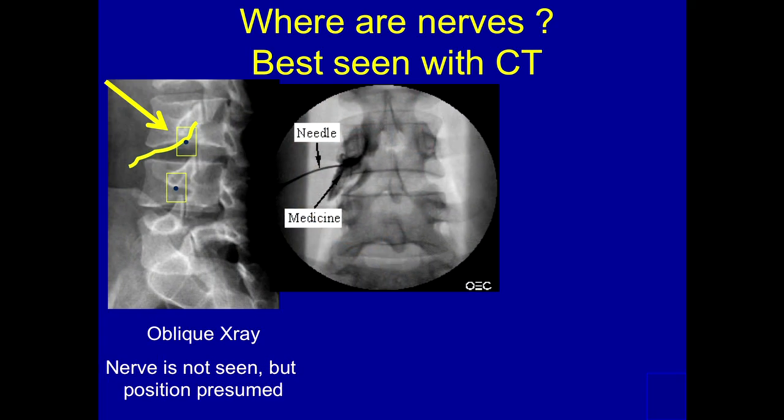You don't know how far in you are under fluoro, so they wait until the patient says that hurts down the leg, and back off a little bit, inject a little contrast to make sure they're not intravascular, and then instill the medication. You can see under fluoro the medication extending both along the nerve root as well as back along the epidural space.